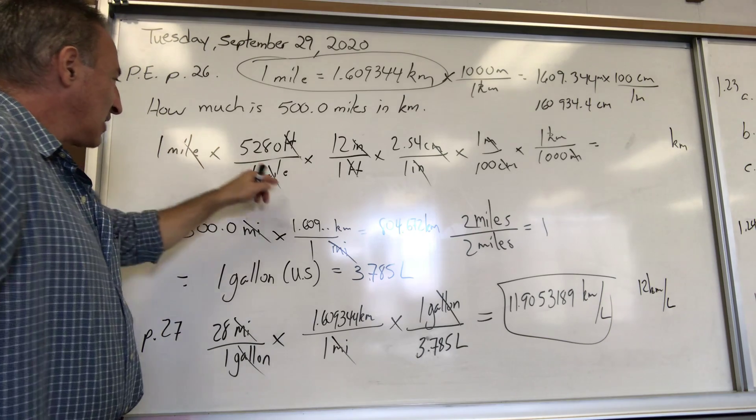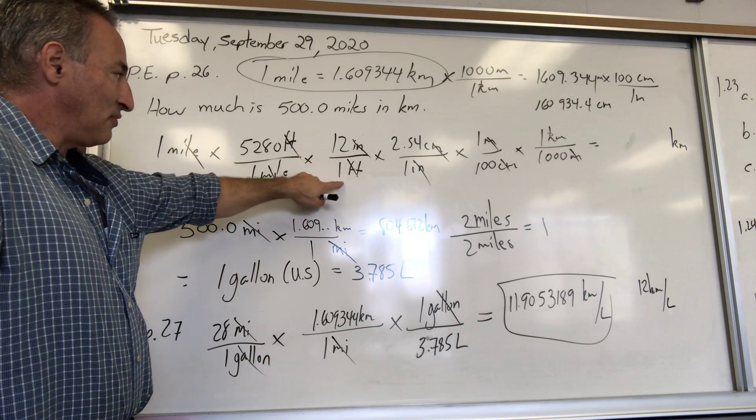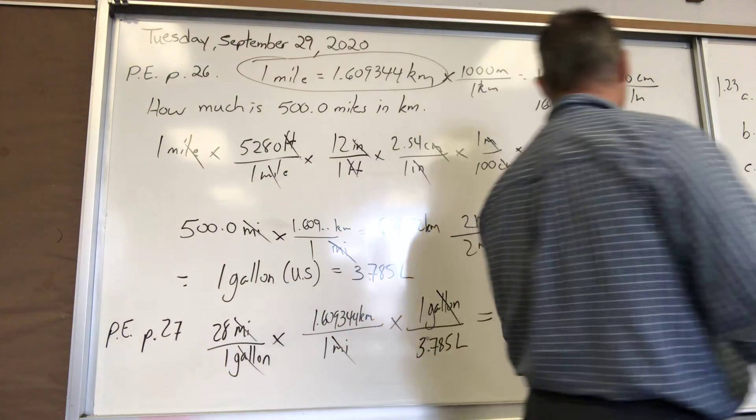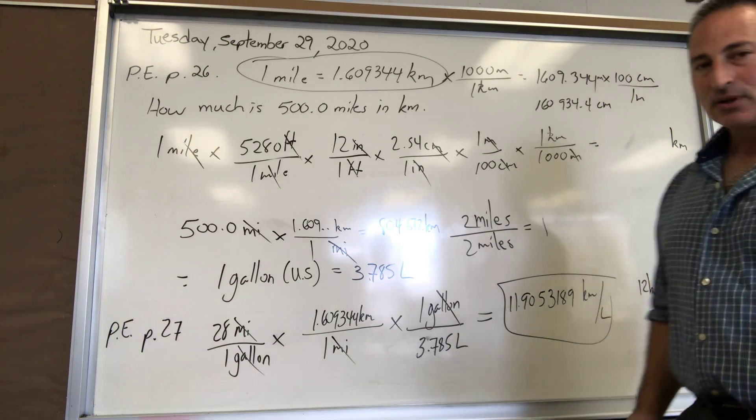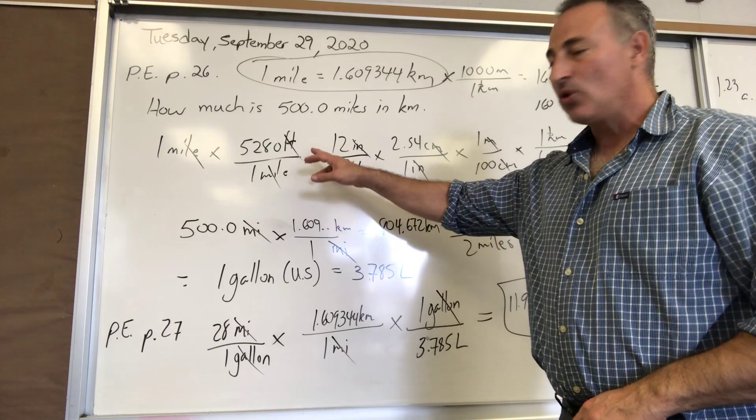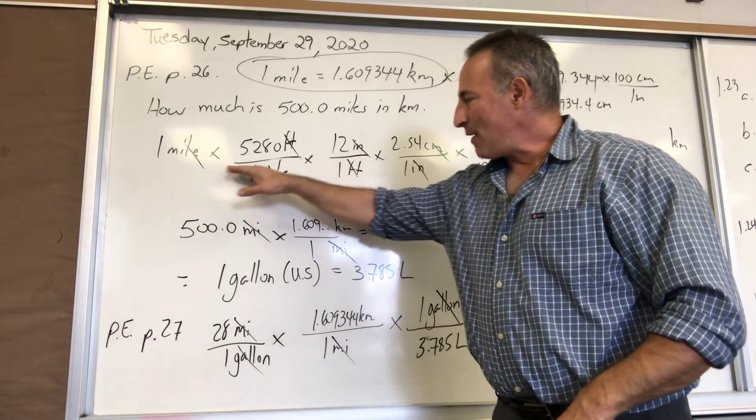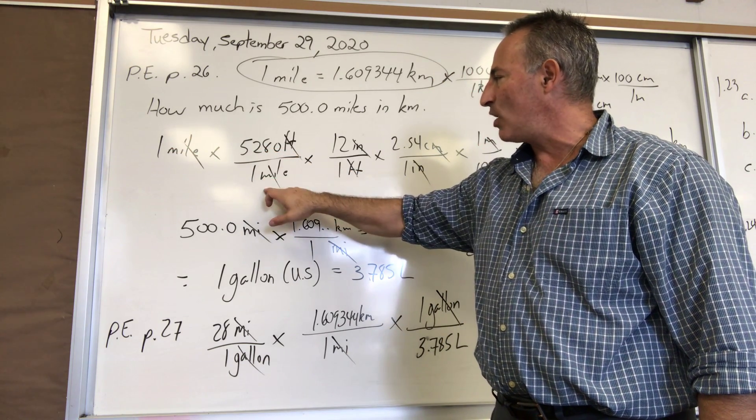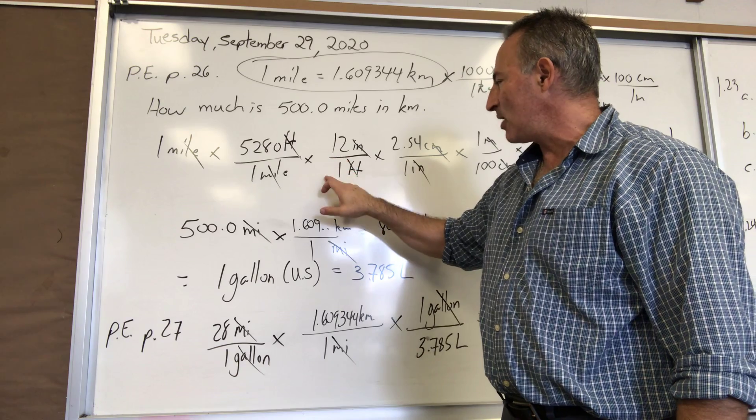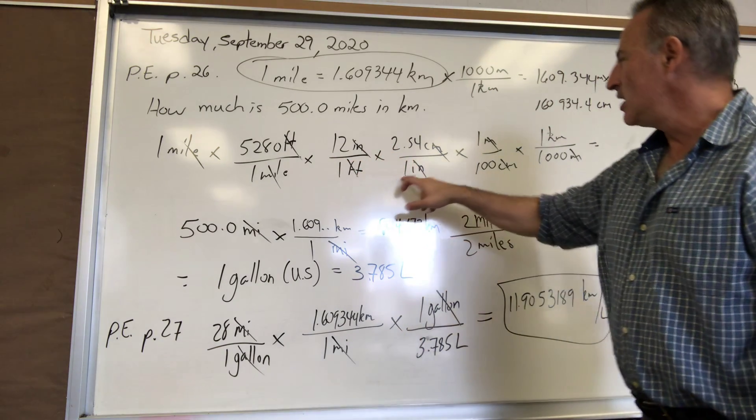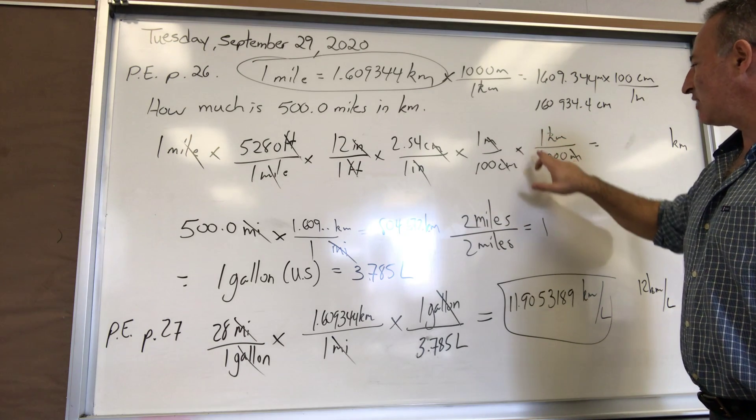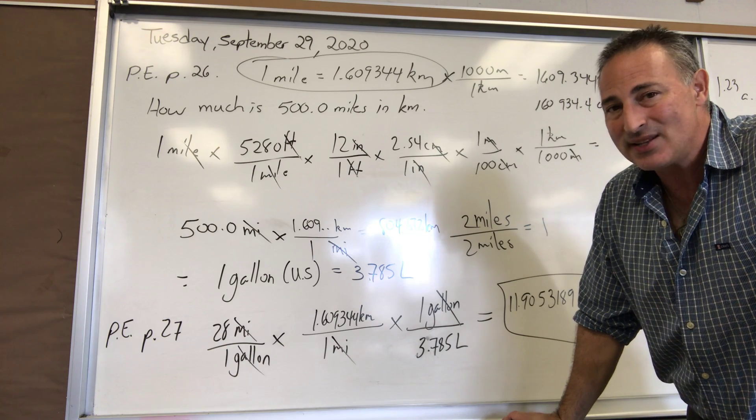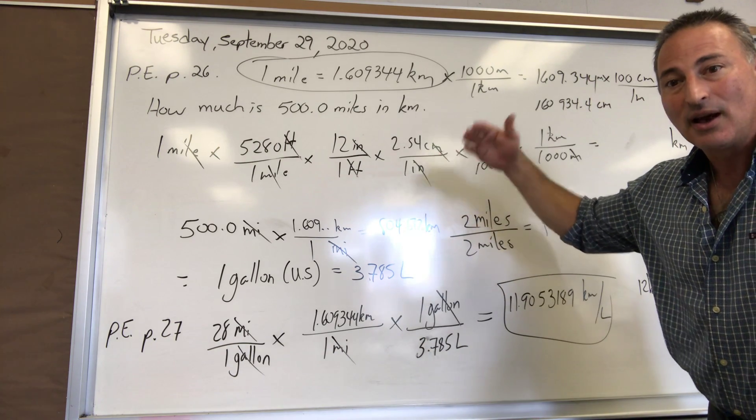Here miles is in the numerator, so I have 5280 feet per mile. I could have said one mile per 5280 feet, but that wouldn't have worked. The way I write this is important—the 5280 feet has to be on the numerator so that allows you to cancel miles. The next conversion factor is written so that feet is on the bottom, and that allows me to cancel feet, and so on down the line.